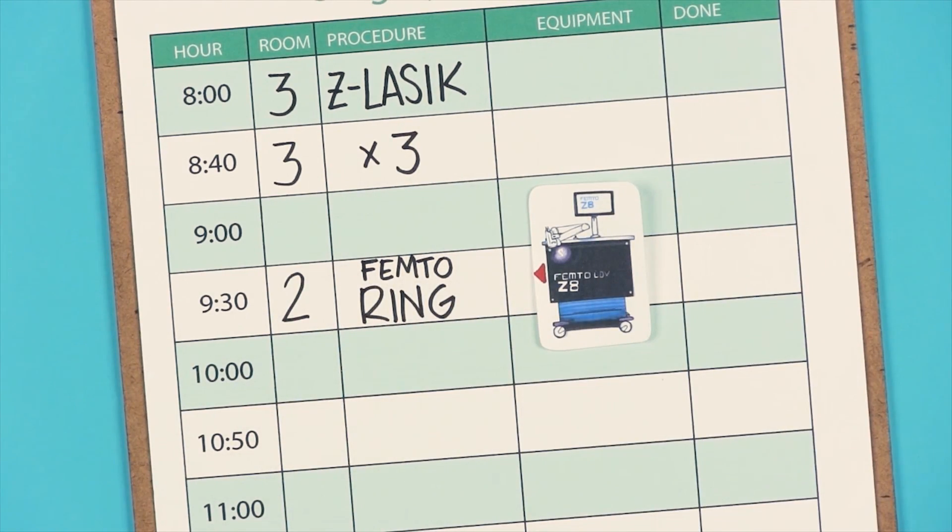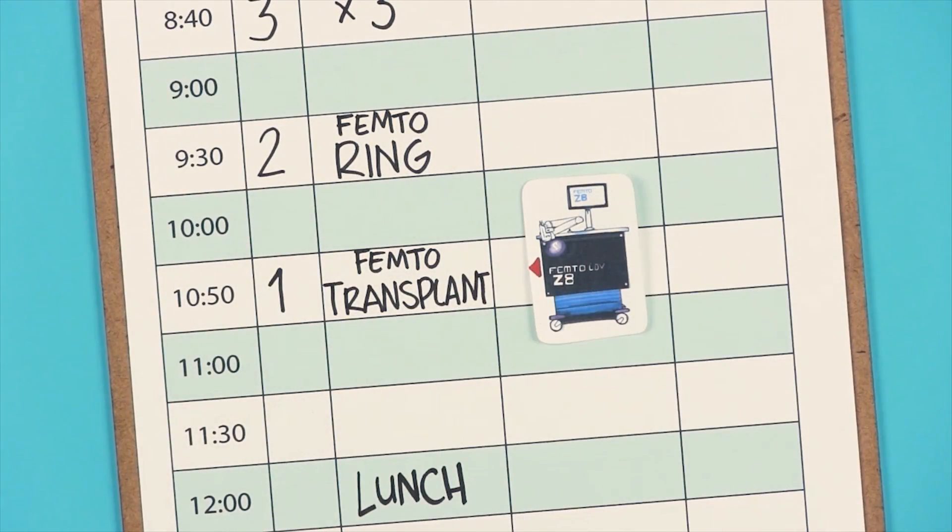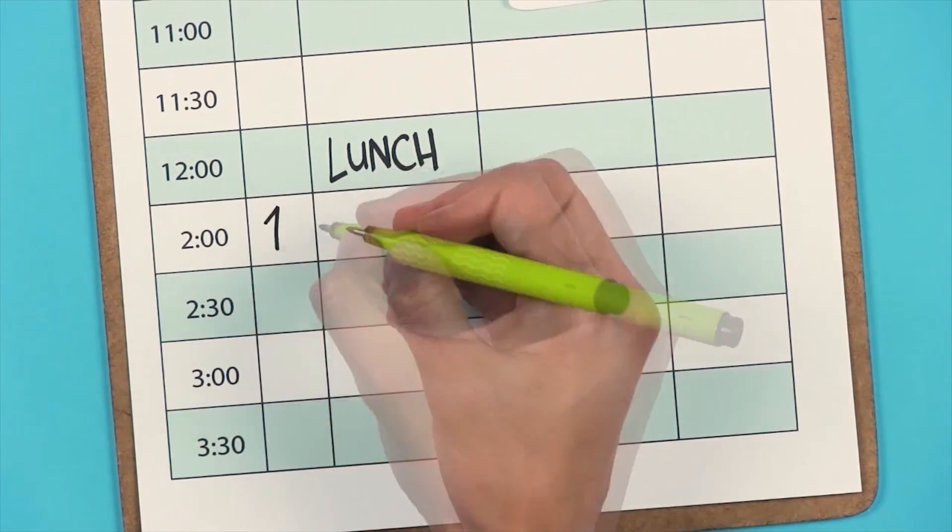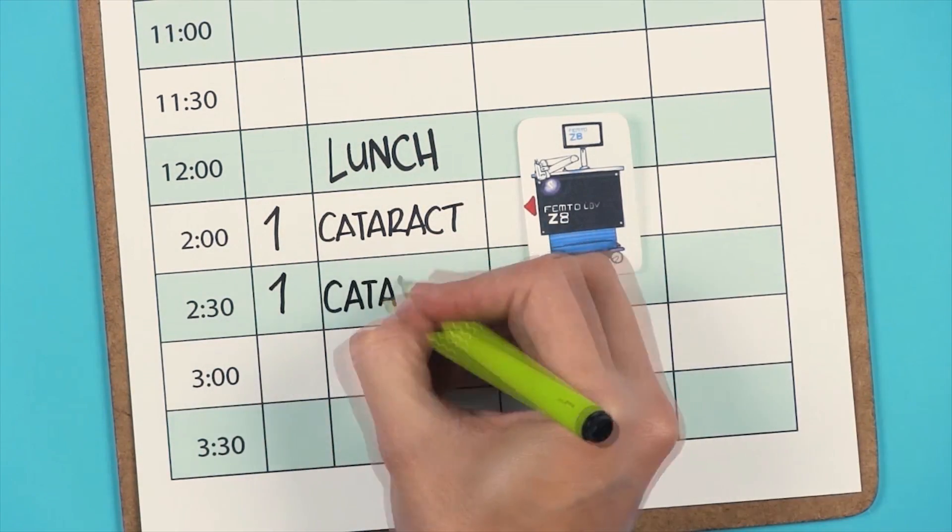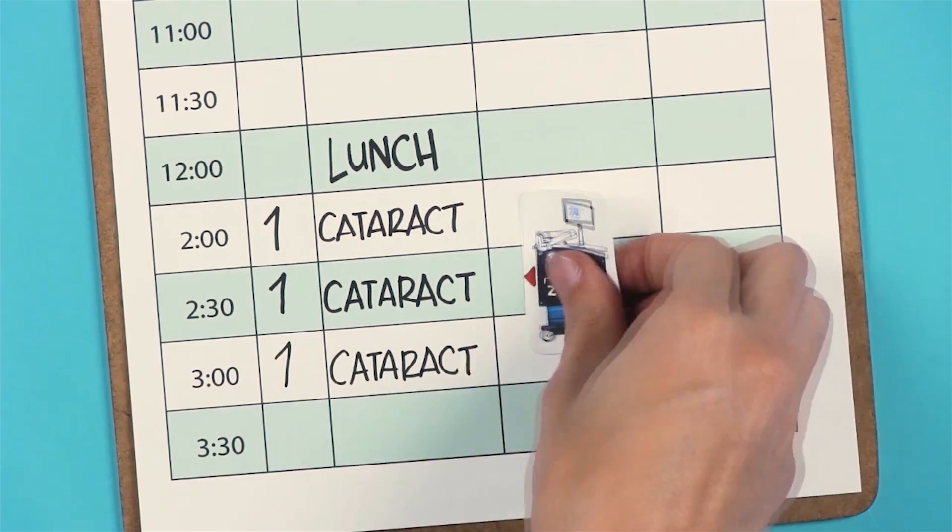At room 2, we can do a corneal ring at 9:30 and a corneal transplant at 10:50. Finally, starting at 2 p.m., we perform three Femto cataract procedures at room 1.